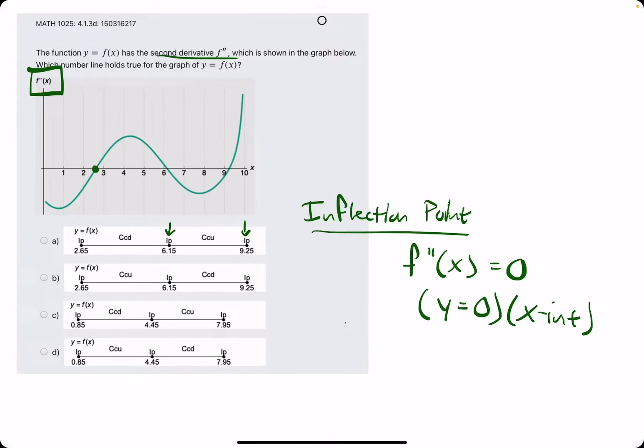So that will help us distinguish what numbers to actually look for on these number lines here. We're looking for x-intercepts first. So let's start there. 2.65 looks solid because that's an x-intercept of f''.